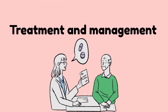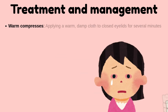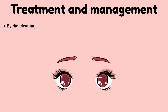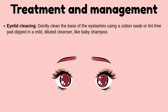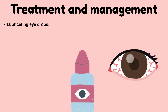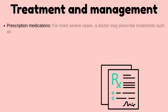Although there is no cure for blepharitis, symptoms can be controlled with a daily eyelid hygiene routine. Warm compresses — applying a warm damp cloth to closed eyelids for several minutes — help to loosen crusts and unplug oil glands. Eyelid cleaning involves gently cleaning the base of the eyelashes using a cotton swab or lint-free pad dipped in a mild diluted cleanser like baby shampoo. Several commercial lid scrubs and sprays are also available.